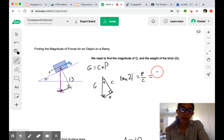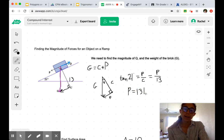equals our opposite side of P over C. Filling in values that we know, that's P over 13. And so, P is equal to 13 multiplied by the tangent of 21 degrees.